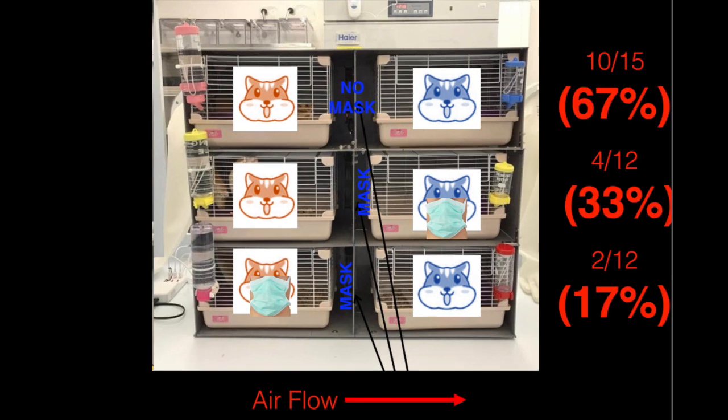And what happened? Basically, the top group, 67% of the hamsters got infected. The second group, 33% of those got infected. And then the last group, only 17% of those got infected.